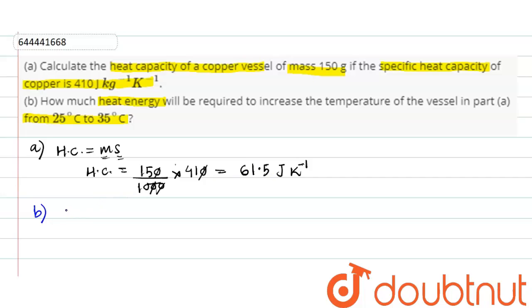The heat required to change temperature is given by Q = m × s × ΔT, where m is mass, s is specific heat capacity, and ΔT is the change in temperature. Or we can say Q = HC × ΔT, where HC is heat capacity.